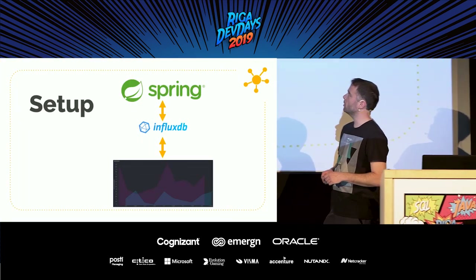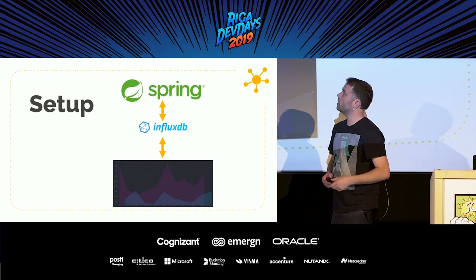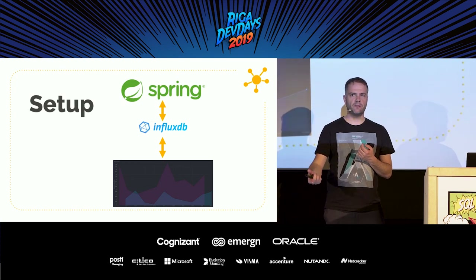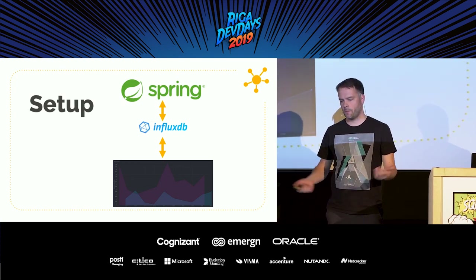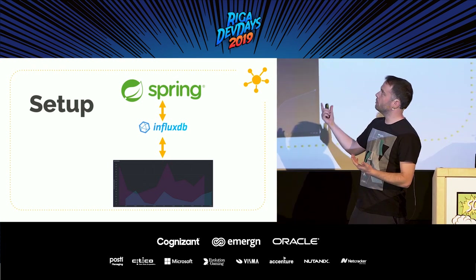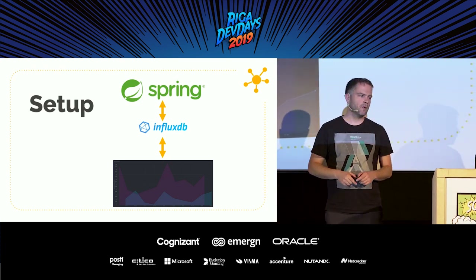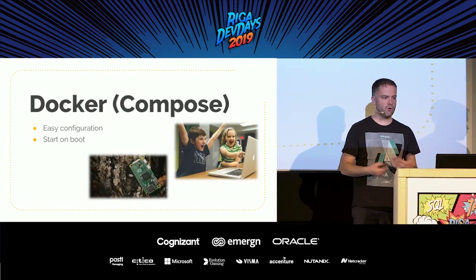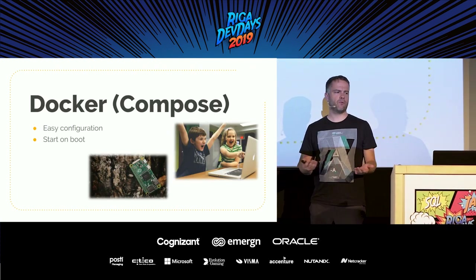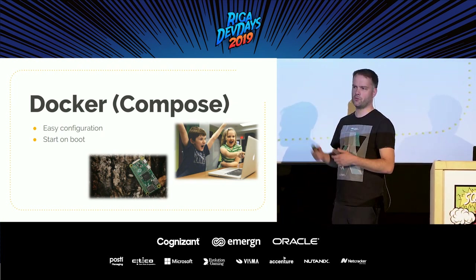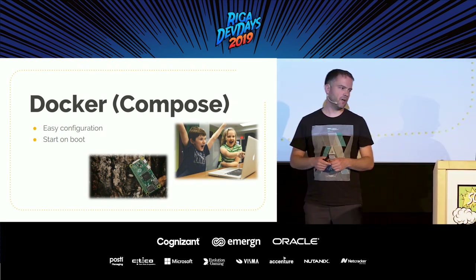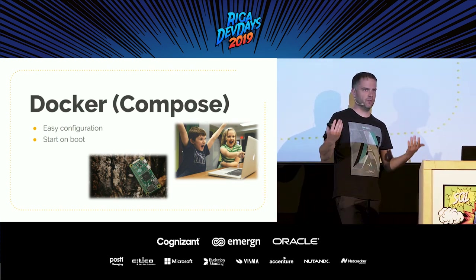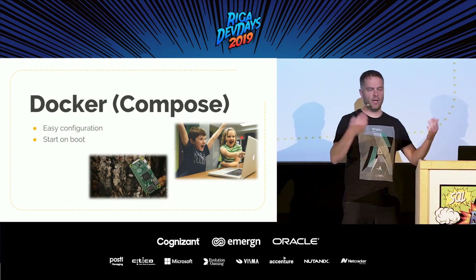So how does the rest of the setup look? I have a Spring application at the top that retrieves data from the sensors and sends it to the InfluxDB database. Then I create a graph which retrieves data from InfluxDB and shows nice graphs. I run InfluxDB and the graphs — in my case Chronograf and Grafana — in Docker containers with Docker Compose so I can easily start them up. But you could also install it manually without Docker.